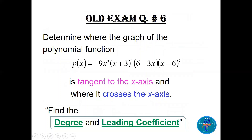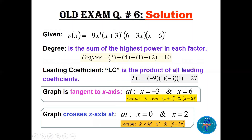Question six is almost the same idea — another nice function. Find the degree, leading coefficient, and where the graph is tangent to or crossing the x-axis. Adding the powers: 3 plus 4 plus 1 plus 2 gives degree 10. The leading coefficient: multiply minus 9 times 1 times minus 3 times 1.